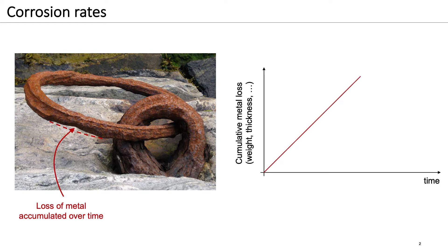We can plot this accumulated loss of metal as a function of time. High corrosion rates lead to a loss of metal over a comparatively short time. For slow corrosion rates, it takes more time to lead to a comparable level of metal loss.